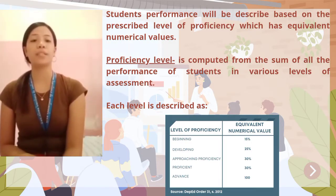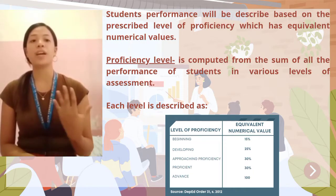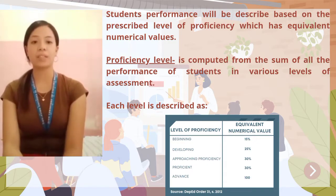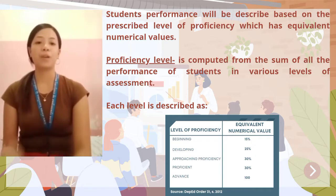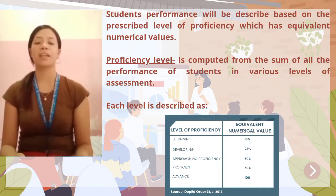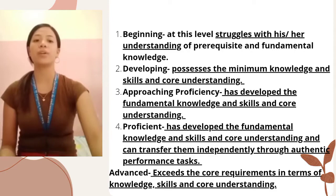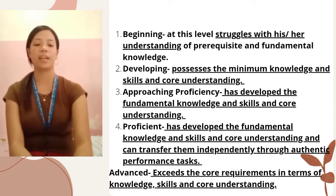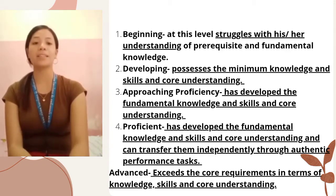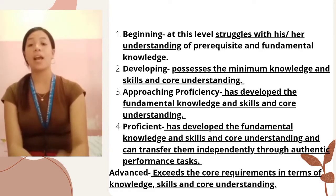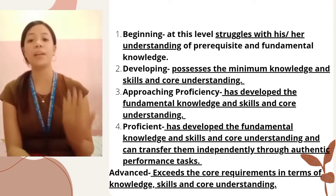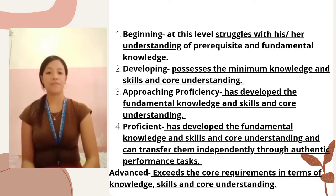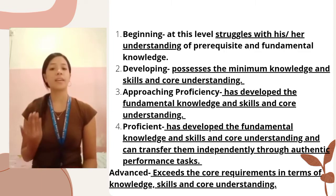There are five proficiency levels: beginning, developing, approaching proficiency, proficient, and advanced. At the beginning level, the student struggles with understanding prerequisite and fundamental knowledge. At the developing level, the student possesses minimum knowledge, skills, and core understanding. At approaching proficiency, the student has developed fundamental knowledge, skills, and core understanding. At the proficient level, the student has developed fundamental knowledge, skills, and core understanding and can transfer them independently through authentic performance tasks. At the advanced level, the student exceeds the core requirements in terms of knowledge, skills, and core understanding.